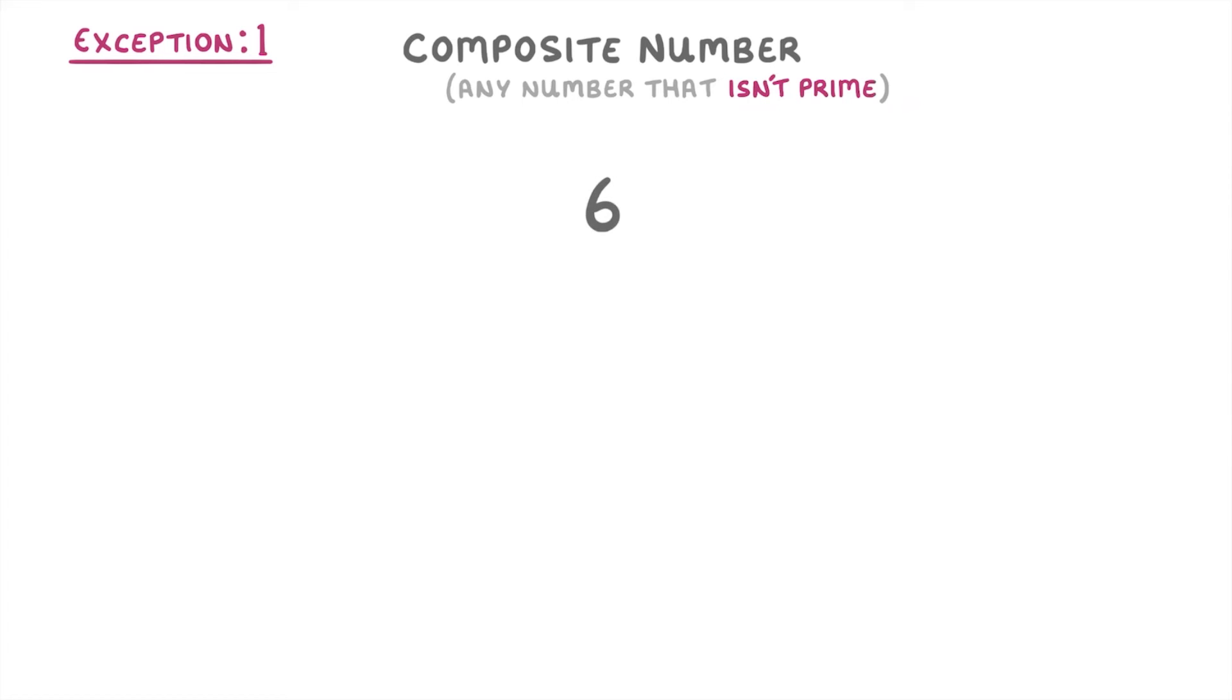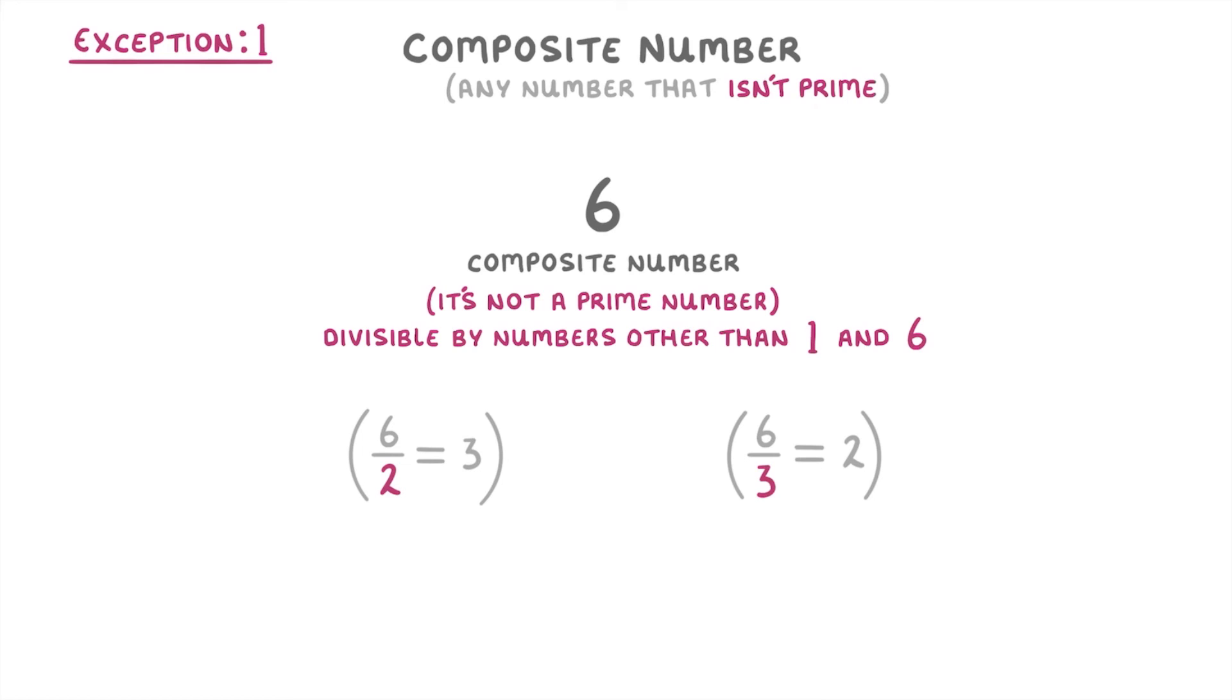So six would be a composite number, because it's not a prime number. Or in other words, it's divisible by numbers other than one and six. In this case, two and three. So numbers like four, eight, nine, and ten would also be composite numbers, because none of these are prime.